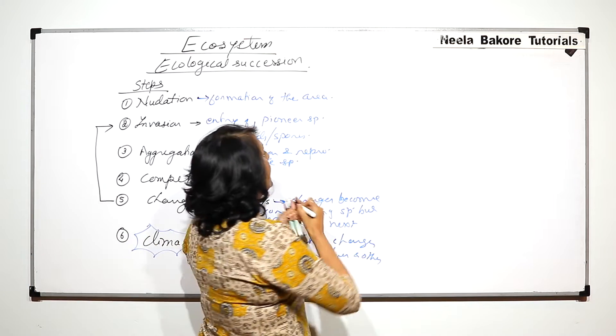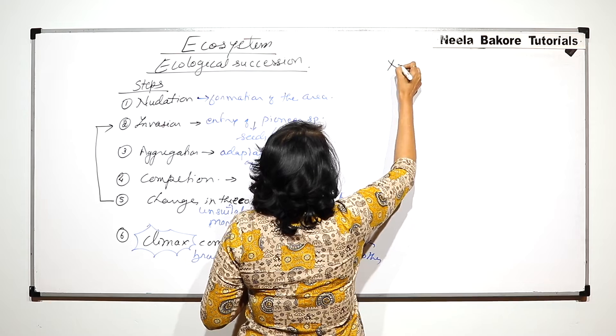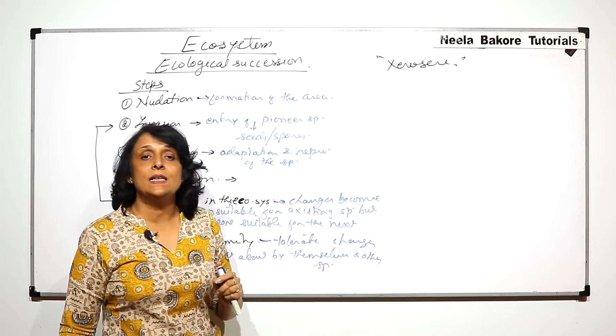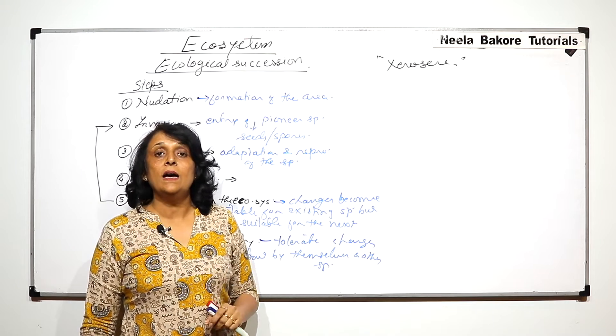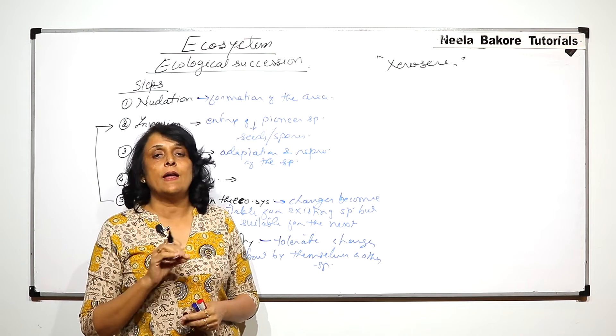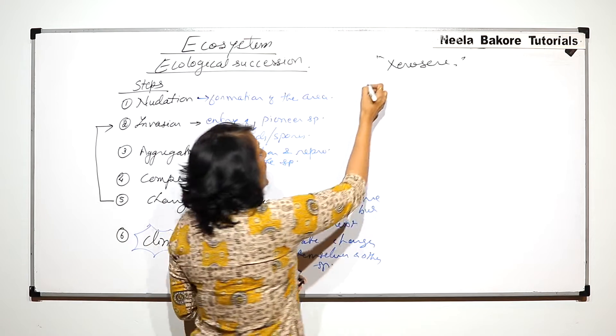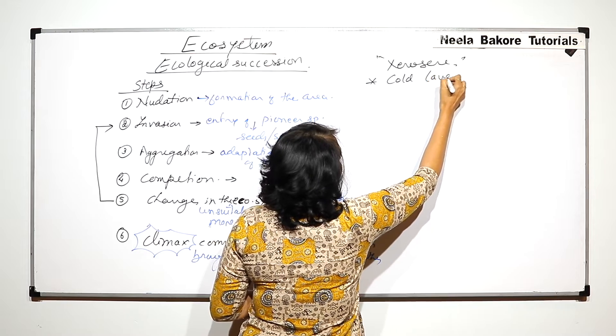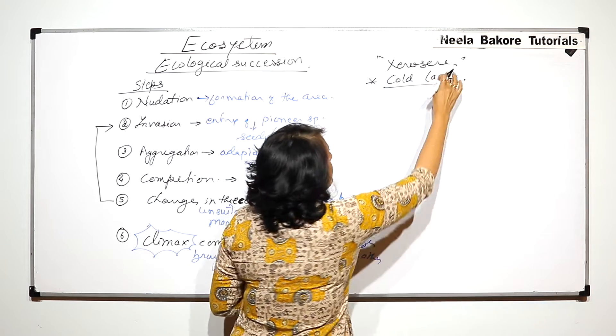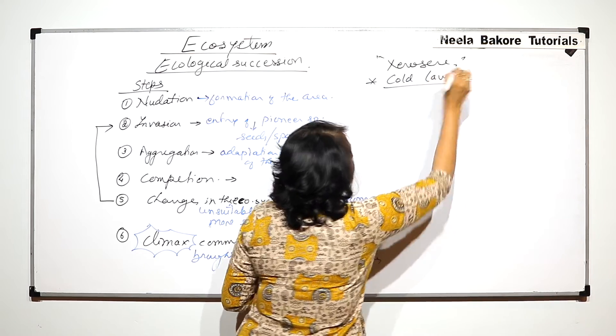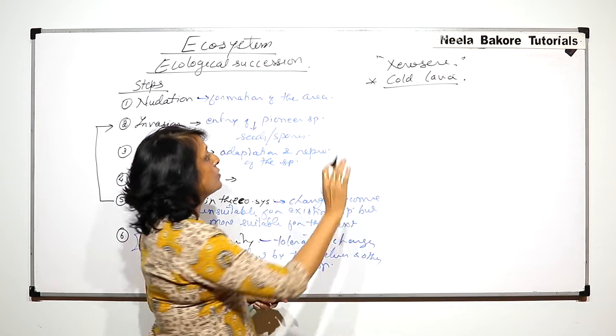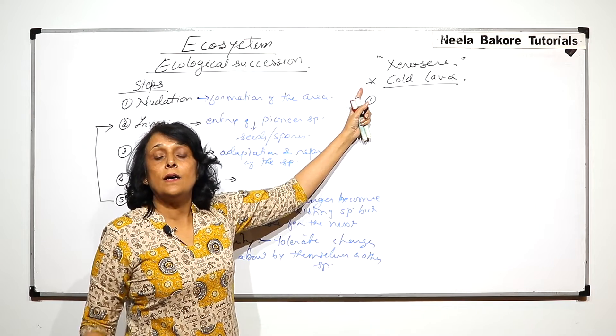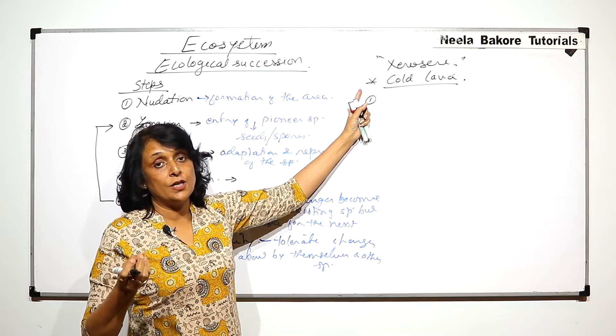If we take the example of xerosere that means succession taking place in a dry area where there is no soil, no organic matter, no water and the area that we take is say cold lava. This is the place where the succession is taking place. What is going to happen first?